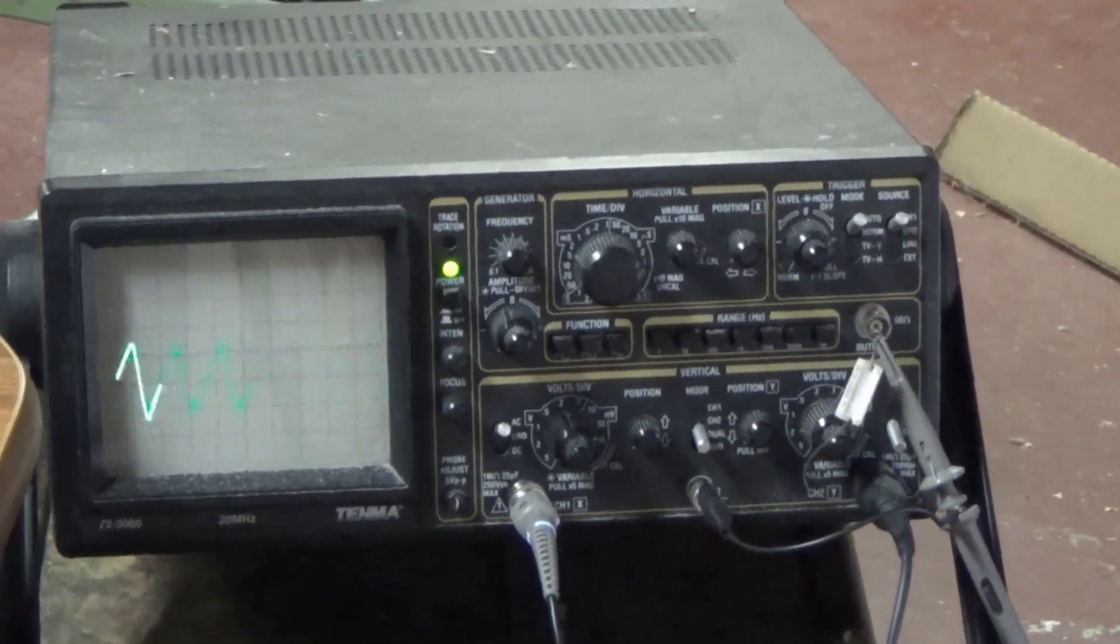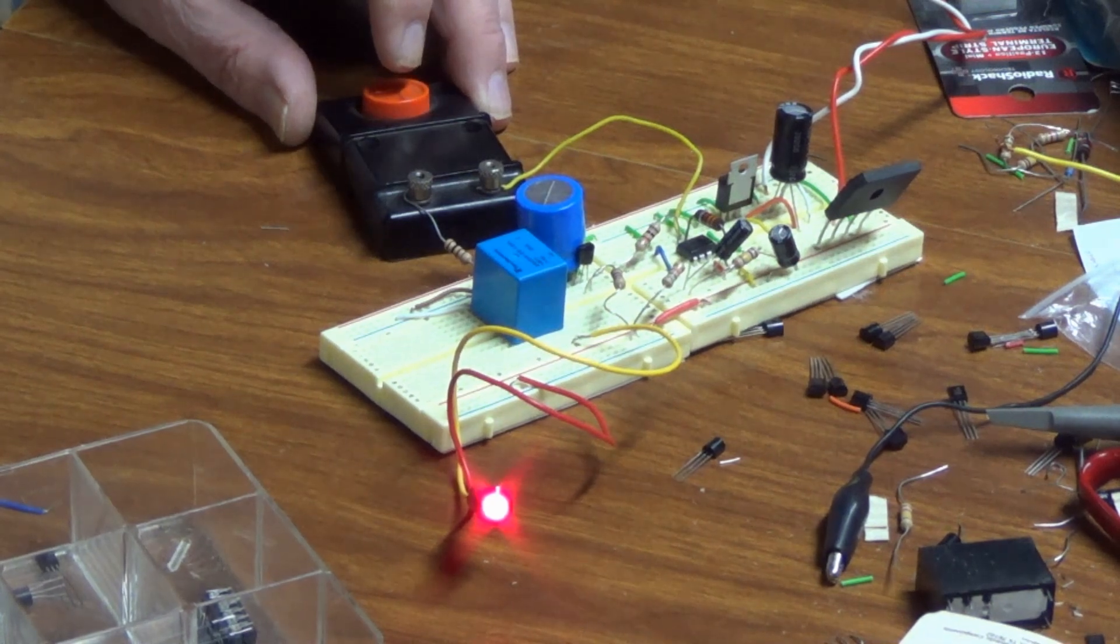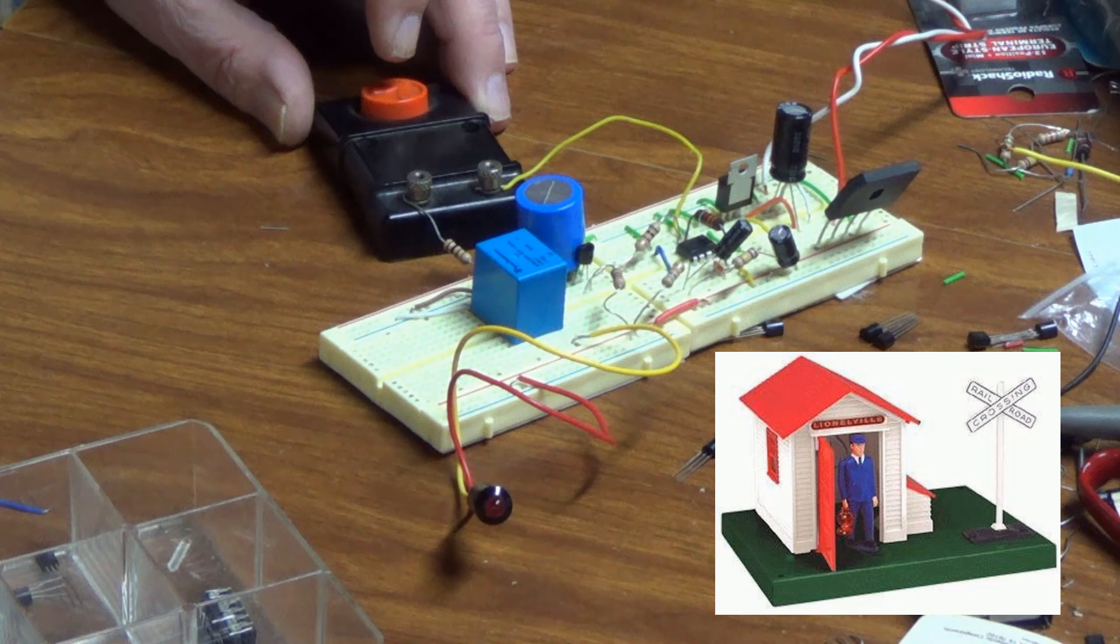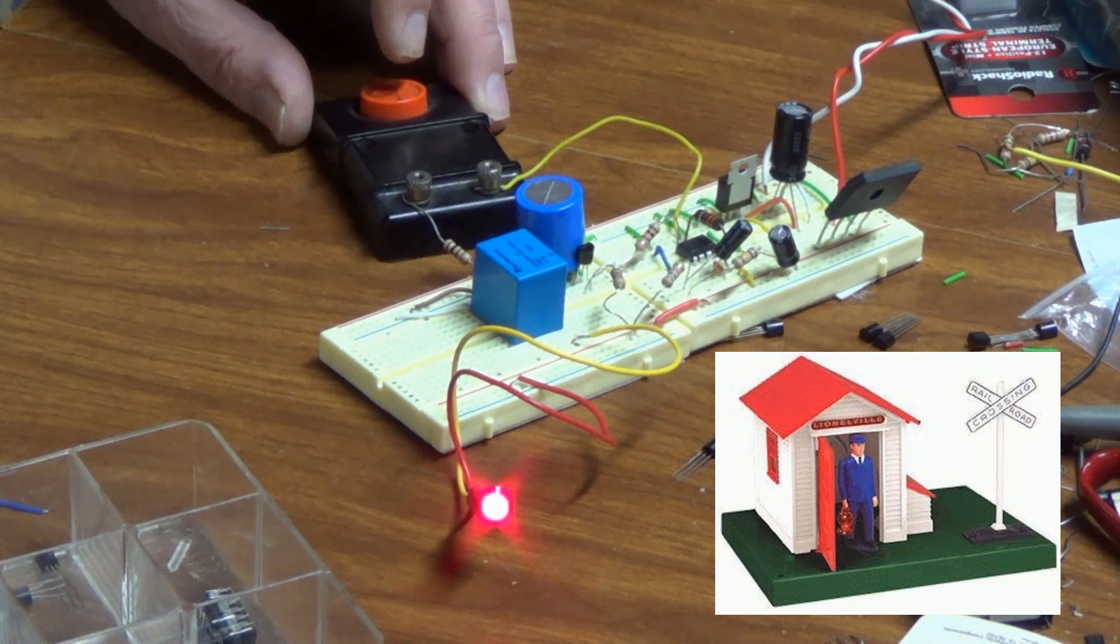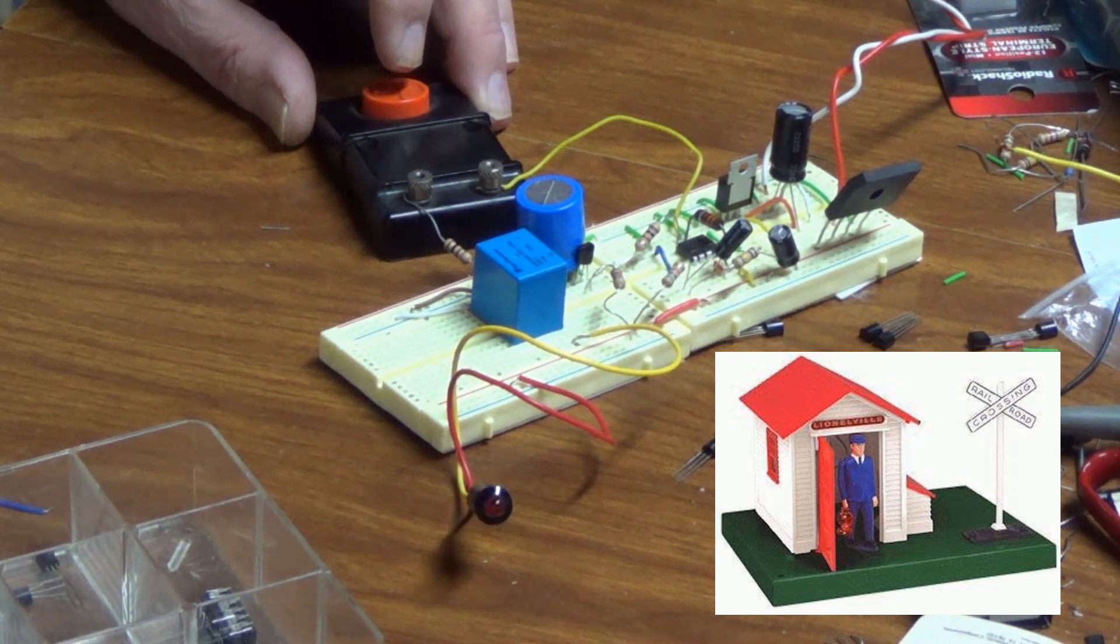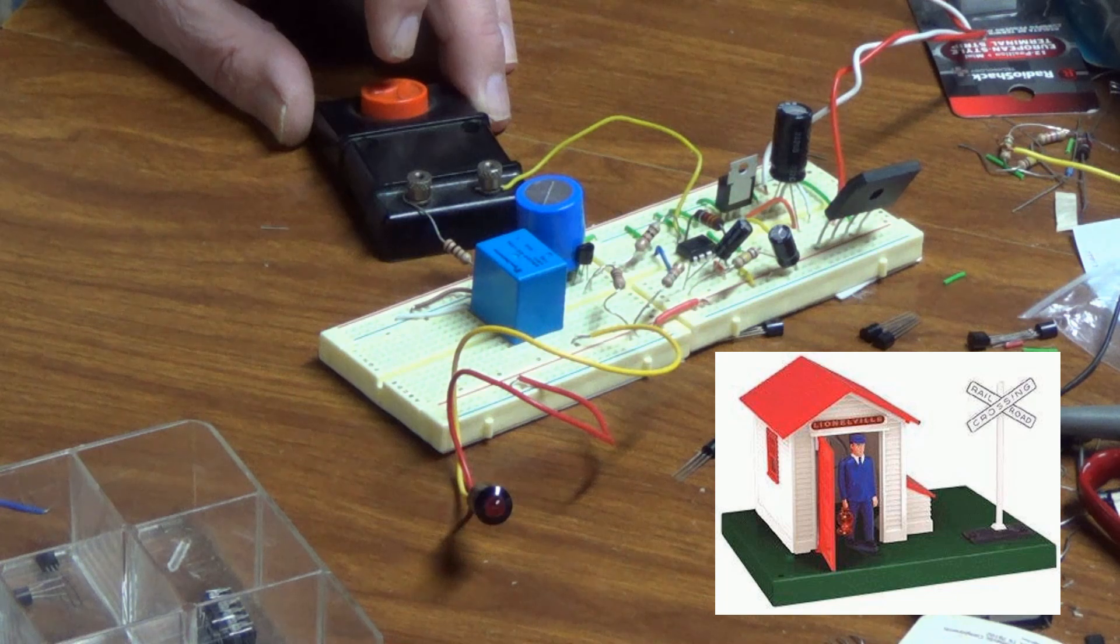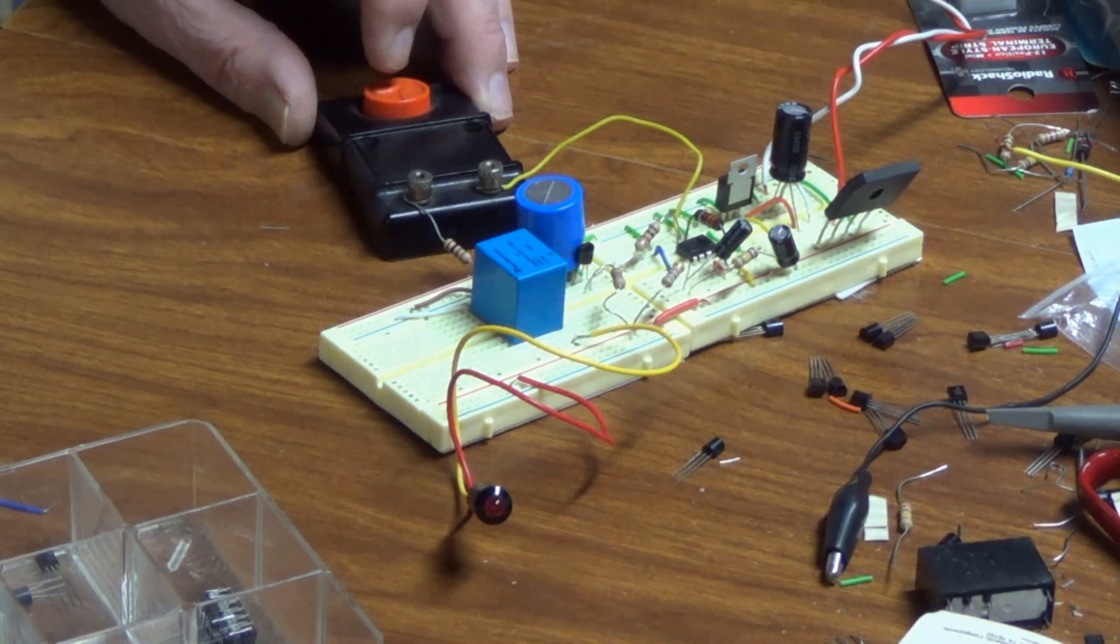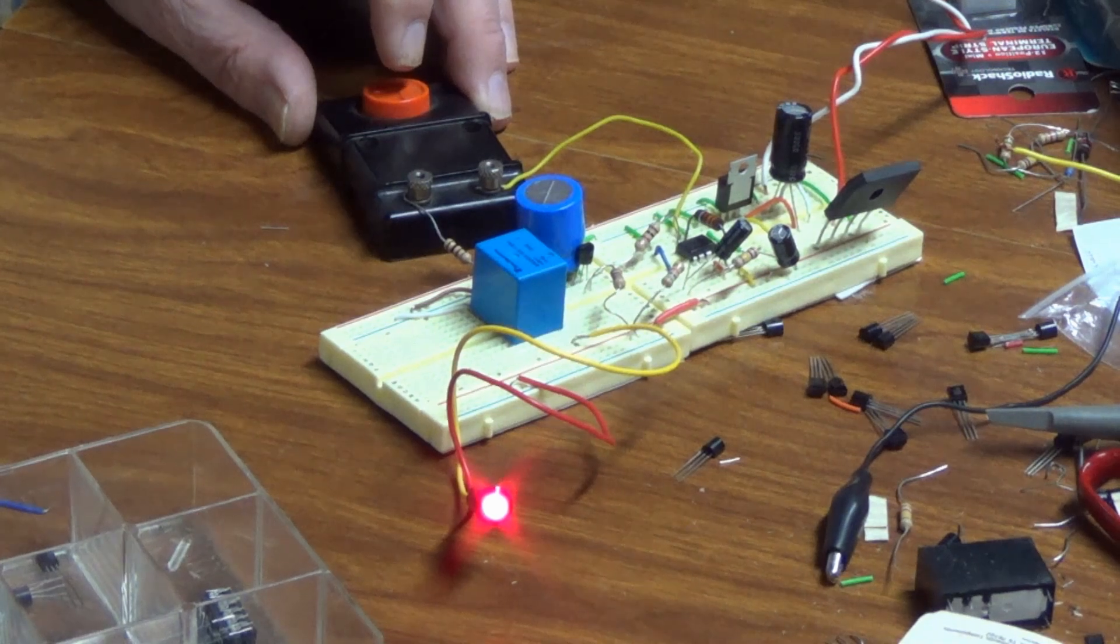I am using a Lionel button to simulate the contact of the train wheels, sending signals to the automatic gateman from the accessory activation track. The red light is connected to the terminals of the relay to simulate the operation of the automatic gateman.